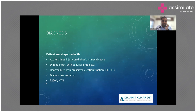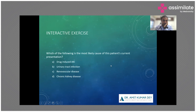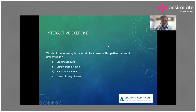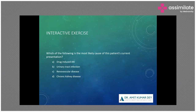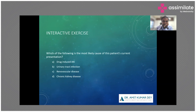Moving ahead, participants are asked: which is the most likely cause of this patient's AKI? Four options are given: (A) drug-induced AKI, (B) urinary tract infection, (C) renal vascular disease, or (D) chronic kidney disease. Participants are asked to submit their answers.